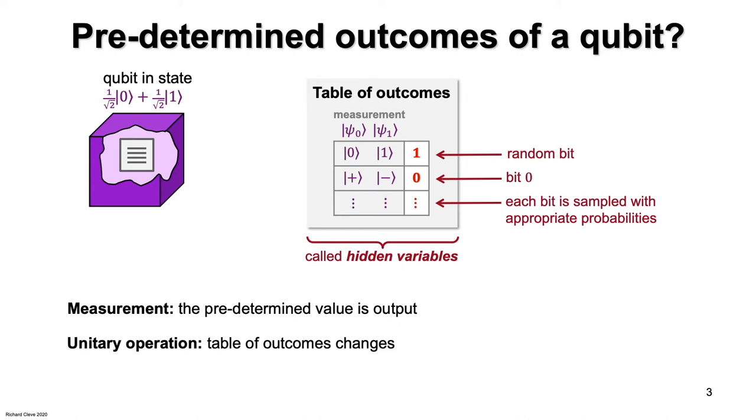Because after applying a Hadamard to this state, the state becomes ket zero. So now measuring in the computational basis produces zero for sure. And measuring in the plus minus basis is what produces a random bit.